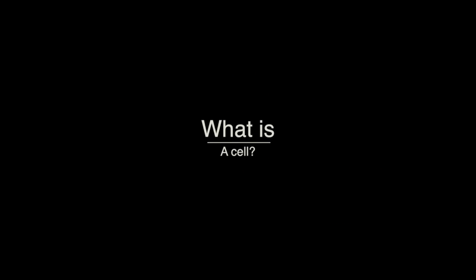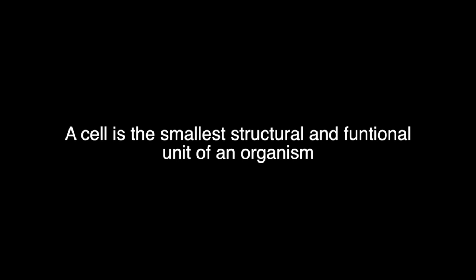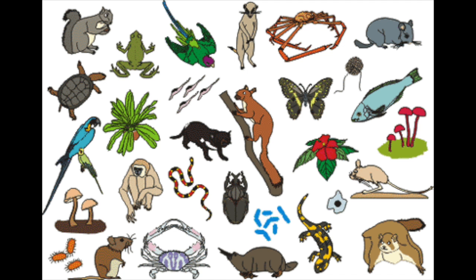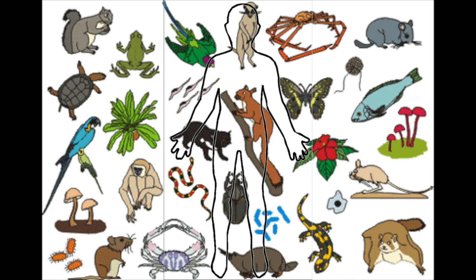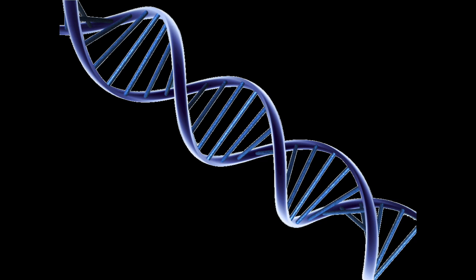But first, what is a cell? A cell is the smallest structural and functional unit of an organism. It is believed that every single living thing is made up of cells, even you. Even more amazing is that the cell houses your DNA, which tells your cell how to make you.